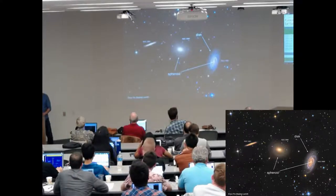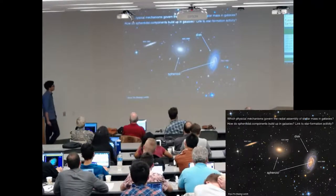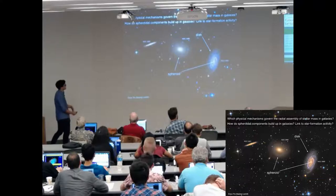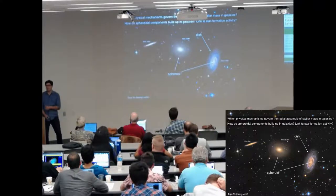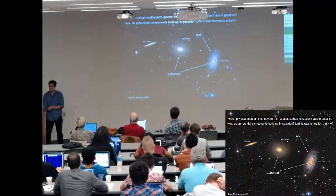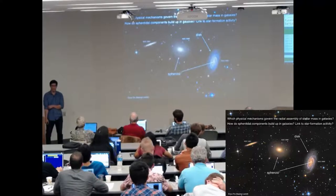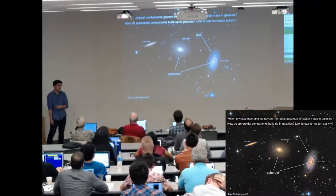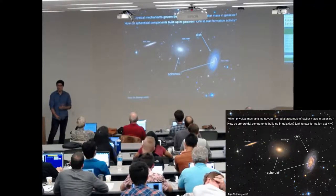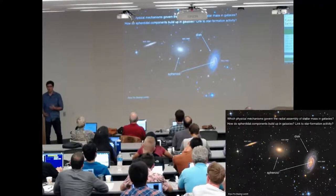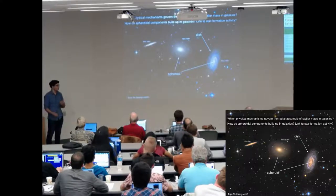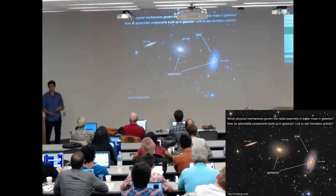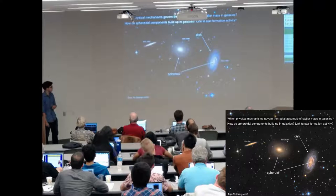In my talk, I will focus on two main questions. The first is which physical mechanisms govern the radial assembly of stellar mass growth in galaxies. The second part will be more on how structural components in galaxies build up with time and, in particular, the link with star formation activity.